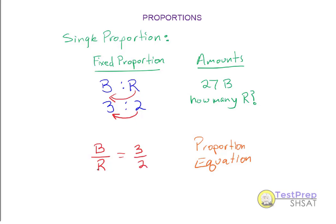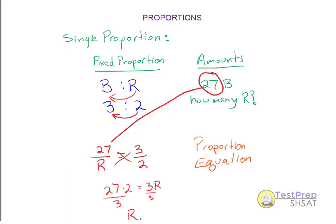So the number of B divided by the number of R equals 3 divided by 2. At this point, I know how many B's I have — the amount given in the problem was 27. I'm going to substitute that amount in for the number of B's. Now I have a proportion equation with one variable I can solve for, R. And it answers the question: how many R would there be given the fixed proportion if there are 27 B's? The answer is R equals 27 divided by 3 is 9, times 2 — R is 18.